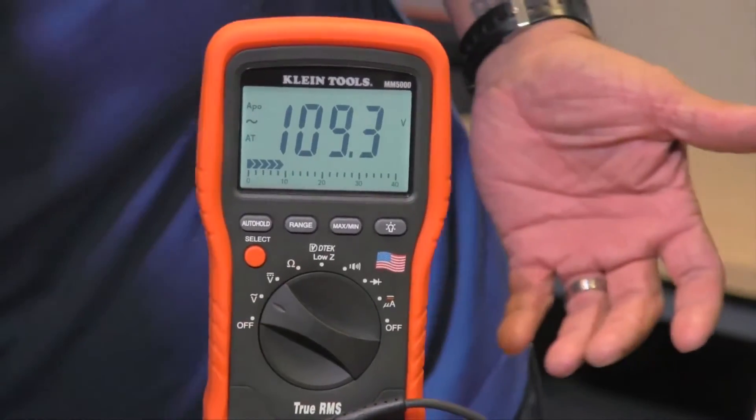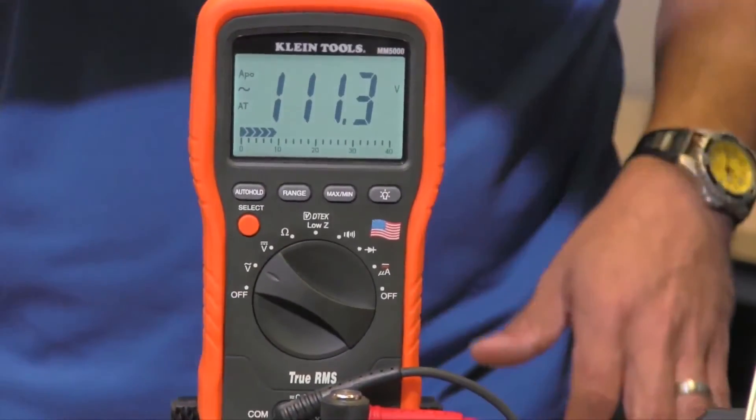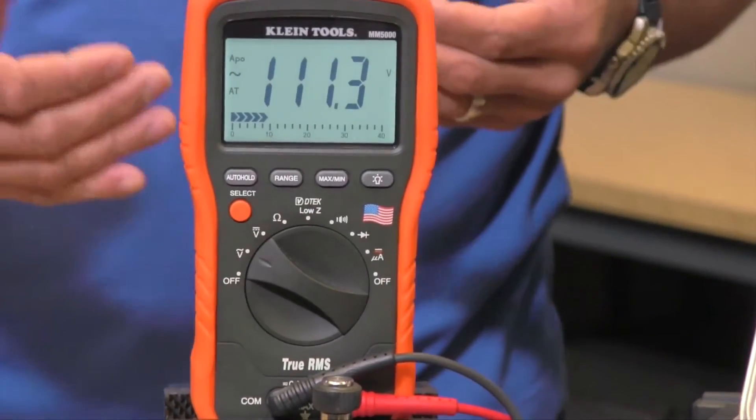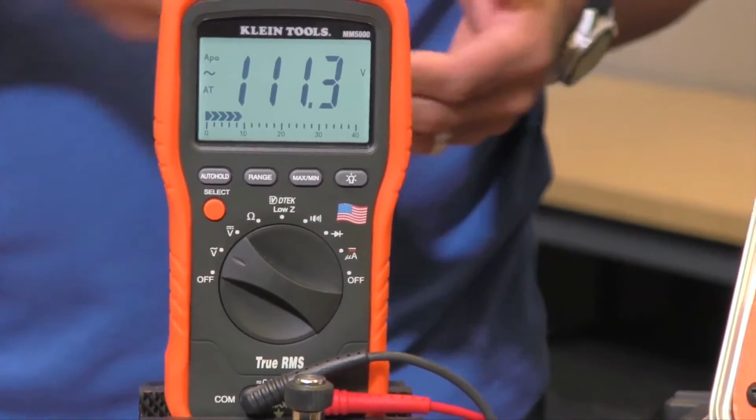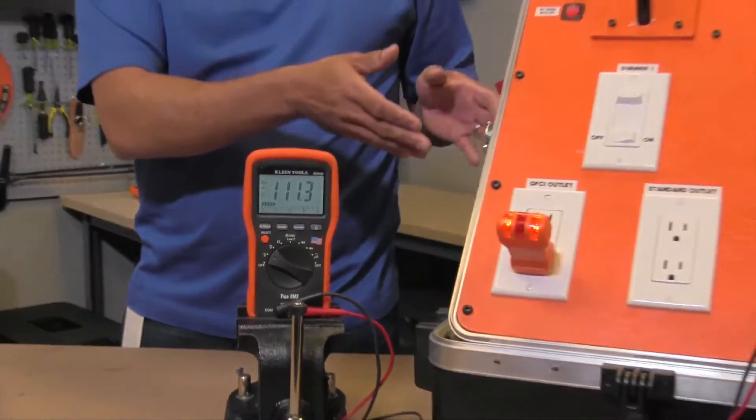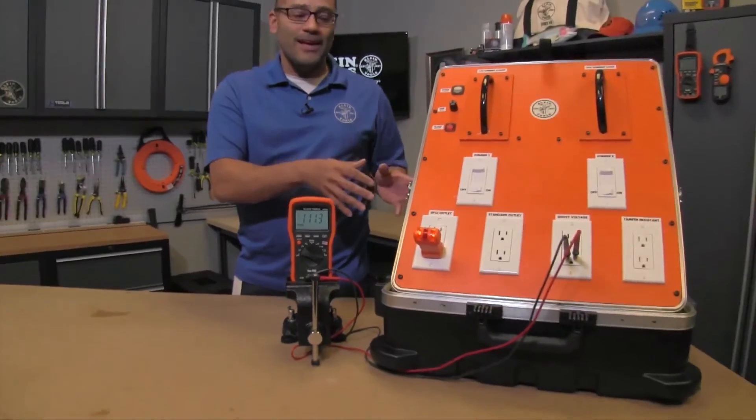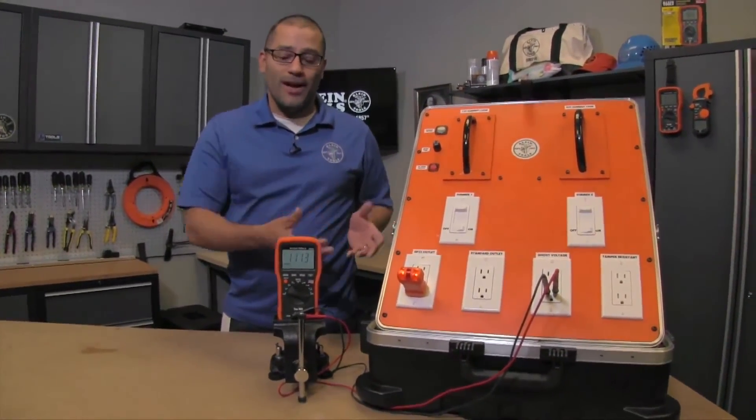You'll notice right now I'm reading approximately 109 volts out of that outlet. Now that's actually within specs and a regular lamp would probably run off of that. However since this outlet we know to be wired differently, if you were to plug in the lamp or the load it wouldn't turn on.